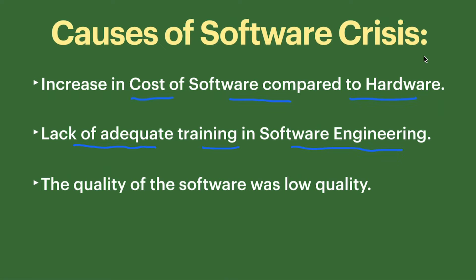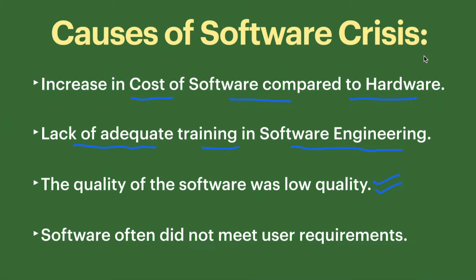Another cause is low quality of the software. Software should always be of good quality — if the quality is low, it will crash and will not fulfill the requirements of the customer, which creates problems. Another cause is if the software does not meet user requirements. If the software is not according to the requirement of the customer or user, that is another reason for software crisis.